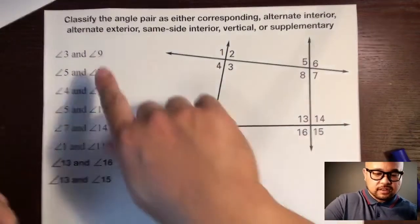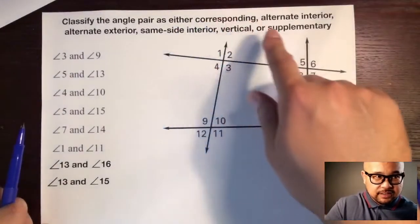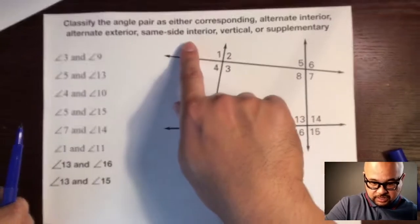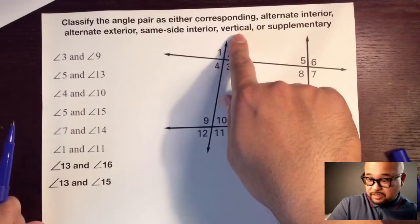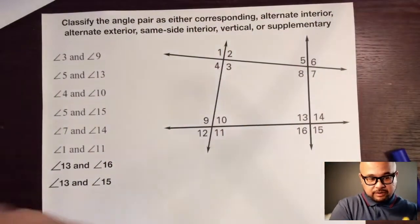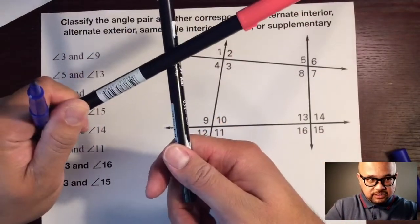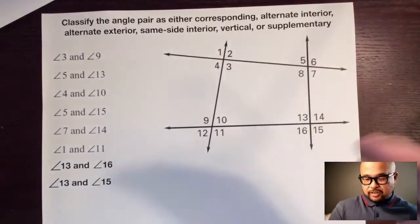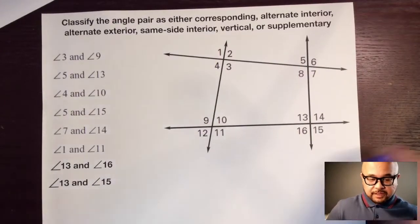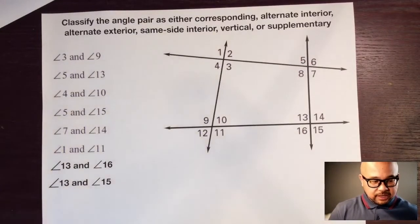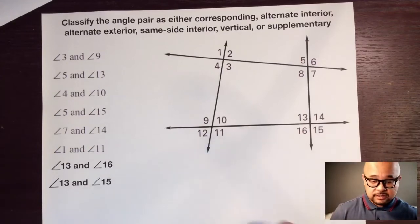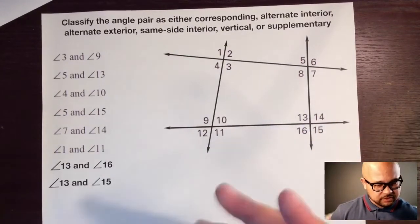Press pause, draw all this in your notebooks, then unpause. Now let's classify angle pairs as either corresponding, alternate interior, alternate exterior, same-side interior, vertical — which we talked about in a previous video — or supplementary, which are angles that add up to 180 degrees and make a straight line. Let's look at the diagram. What kind of angles are three and nine? Press pause and try these on your own first.